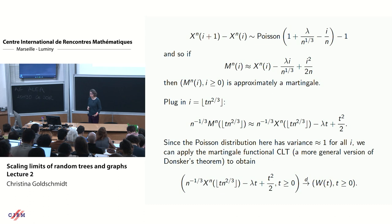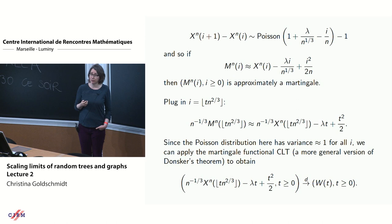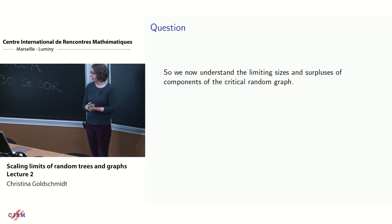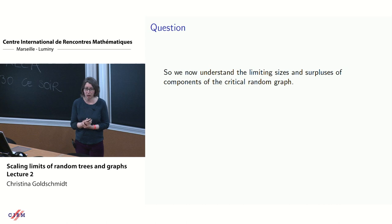That's roughly Aldous's argument for convergence of the depth-first walk. Aldous actually worked breadth-first rather than depth-first, but it makes no difference as all processes involved have the same scaling limits. We now roughly understand the limiting sizes and surpluses of the critical random graph components.